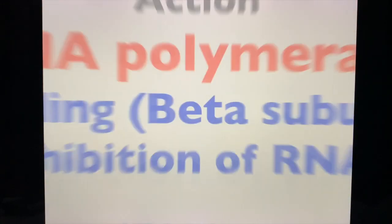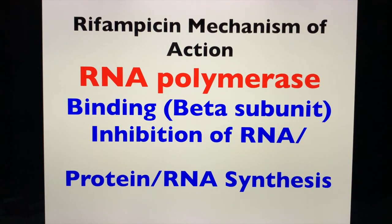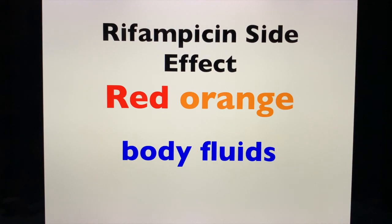What about rifampicin? For the mechanism of action of rifampicin, remember that letter R stands for RNA polymerase. Rifampicin binds to the beta subunit of your RNA polymerase, thereby inhibiting RNA and protein synthesis. As a side effect, rifampicin is famous for causing red-orange body fluids — it makes your sweat and urine appear red-orange.